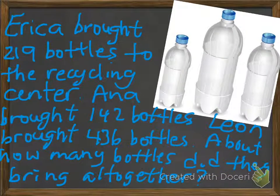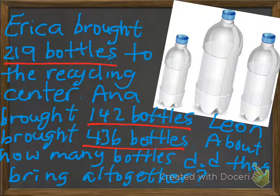Here's our example. Erica brought 219 bottles to the recycling center, Anna brought 142 bottles, and Leon brought 436 bottles. About how many bottles did they bring all together? And that's the key word here, about. That lets us know we need to estimate. We're also going to solve this completely all the way through after we estimate.